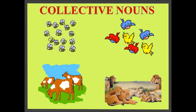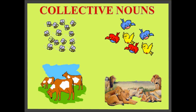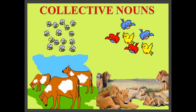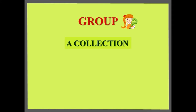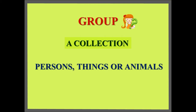Hello children, let us do a new topic in grammar today: collective nouns. Can you see groups of animals or birds on the screen? Yes, you can see a group of bees, a group of birds, a group of cows, a group of lions. What is the meaning of group? Group is a collection. In English, we have a special name given to a collection of persons, things or animals. We call it a collective noun.